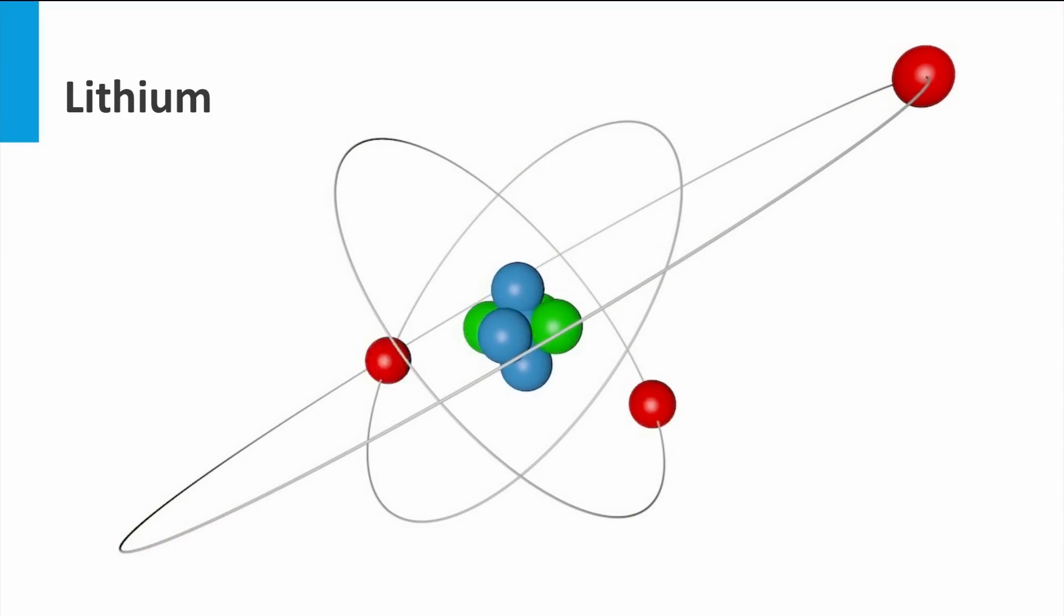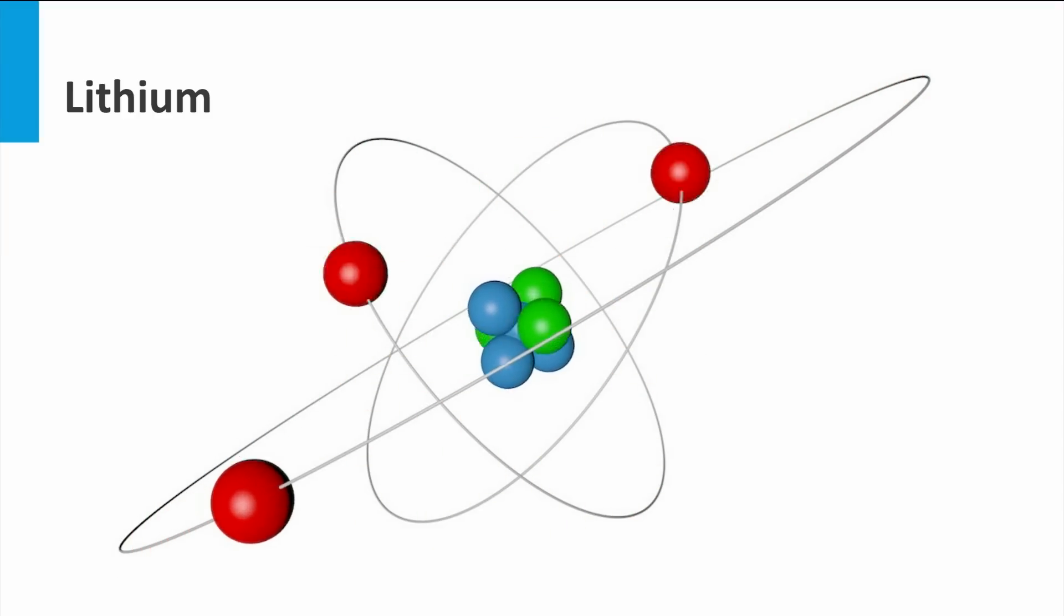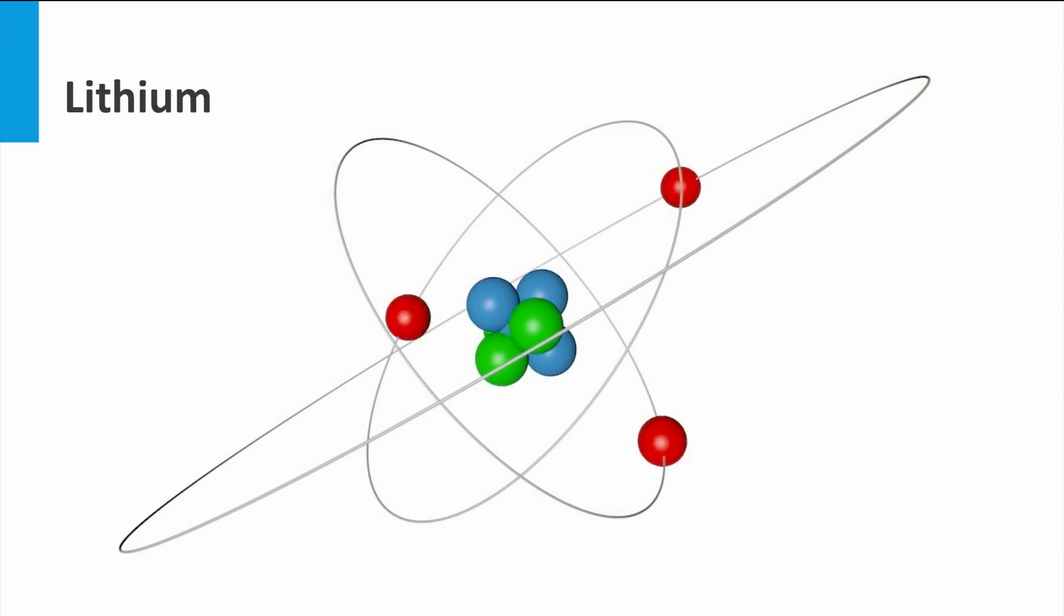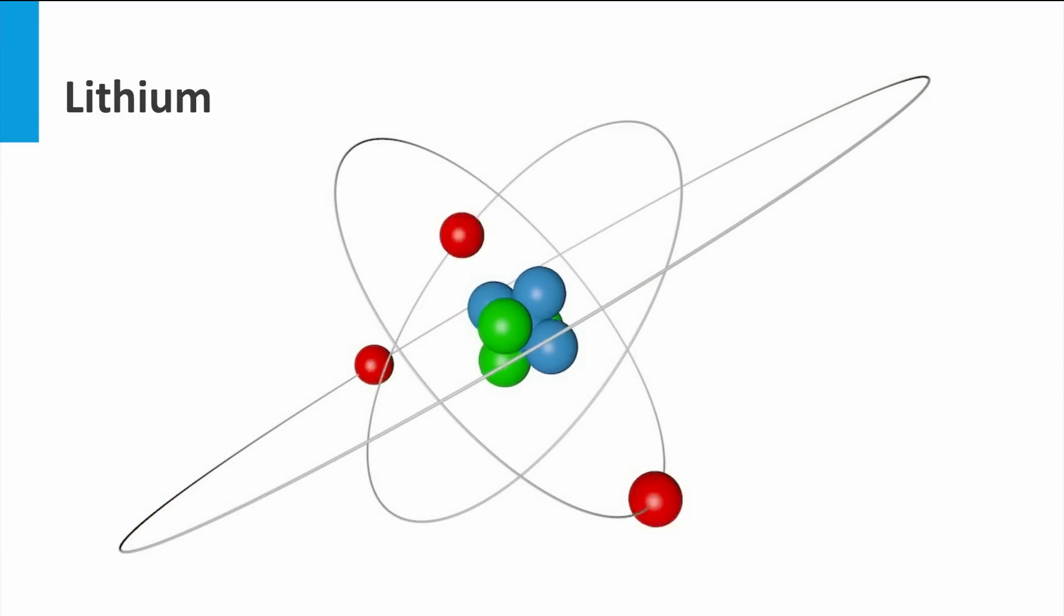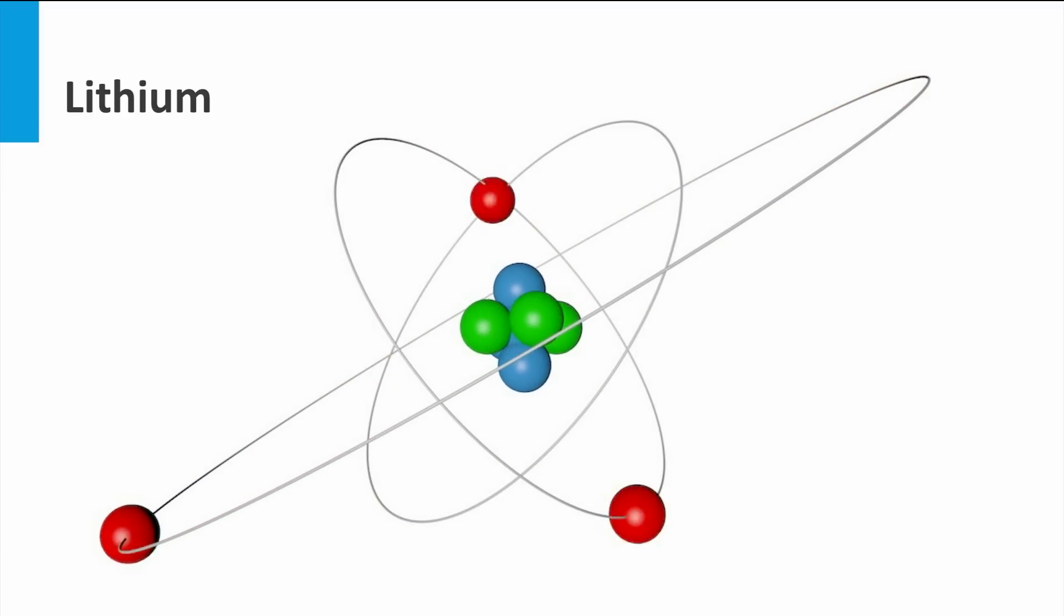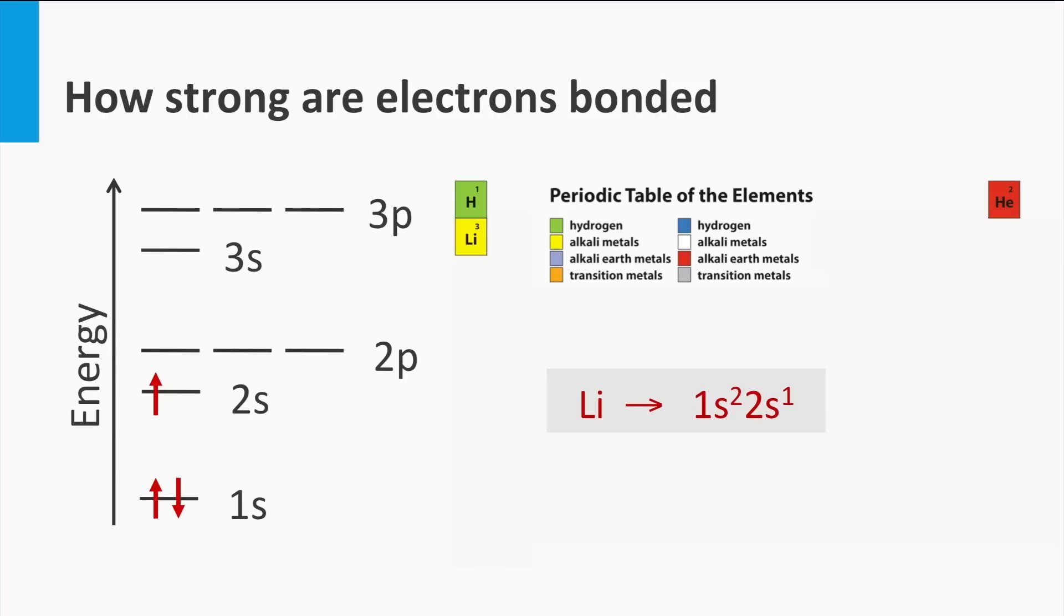If we now move to the next element in the periodic system, the lithium atom, the nucleus has beside three neutrons, three protons and three electrons in orbit around its nucleus. Following Pauli's exclusion principle, the third electron cannot join the two other electrons in the 1s ground state. Of course, whether it has a spin up or a spin down, it always will be identical to one of the other electrons in the ground state. As a result, the third electron will fill the next lowest state, which is the 2s state.